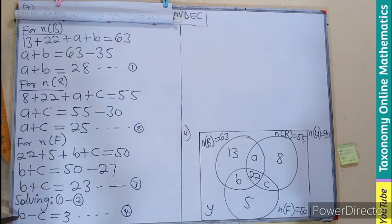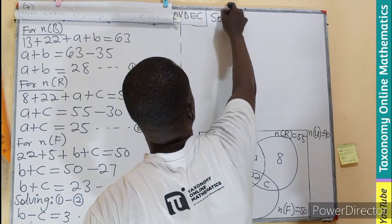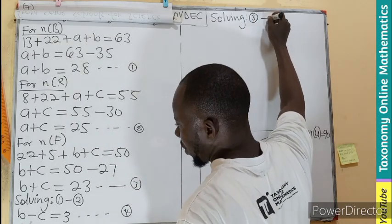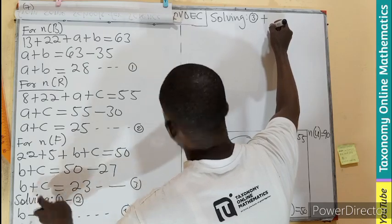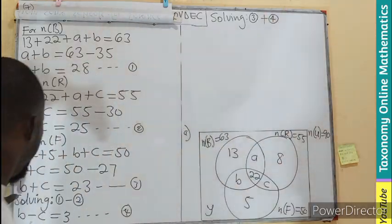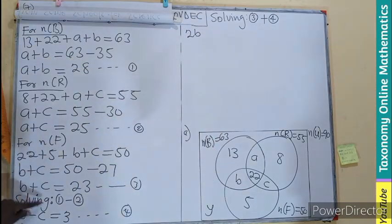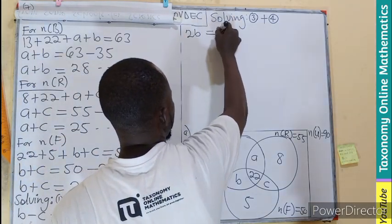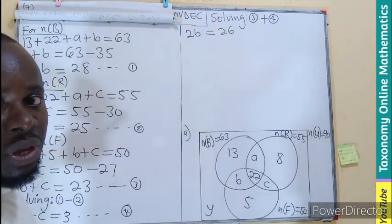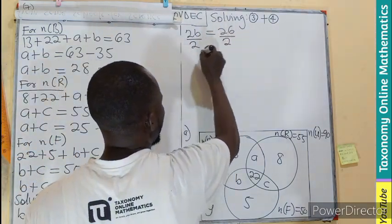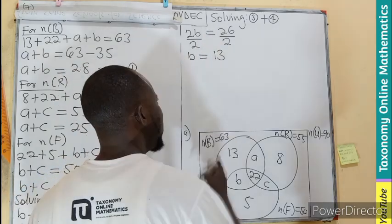Equation four and equation three have the same variables B and C, so I can solve them together. Since I have negative C in equation four and positive C in equation three, let's add them: B plus B gives 2B, C minus C gives zero, 23 plus 3 gives 26. So 2B equals 26, meaning B equals 13.